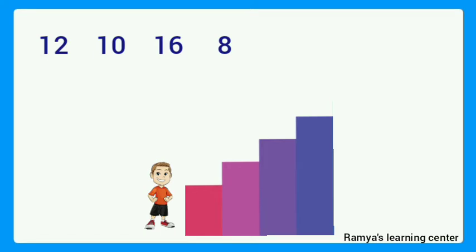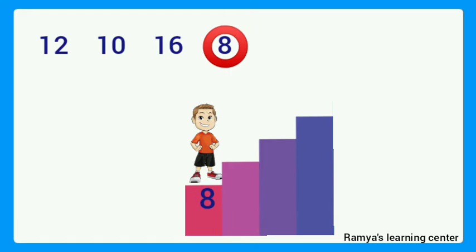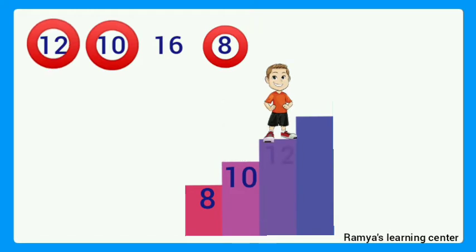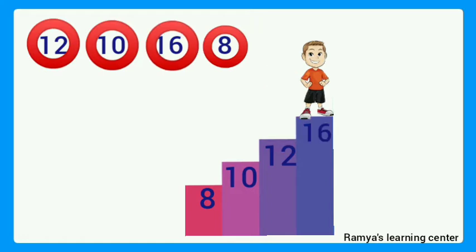What is the smallest number? It is 8. Then the next number will be 10. Then the next number is 12. Finally, the biggest number is 16. The numbers are 8, 10, 12, and 16. Now the boy has reached the top.